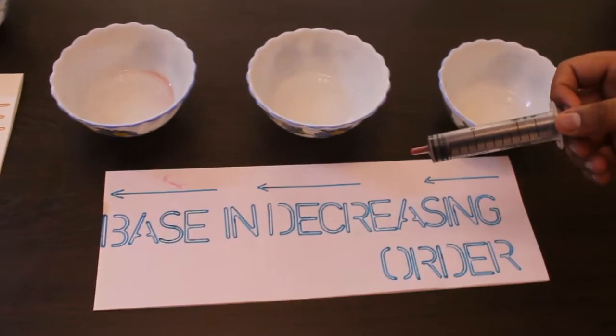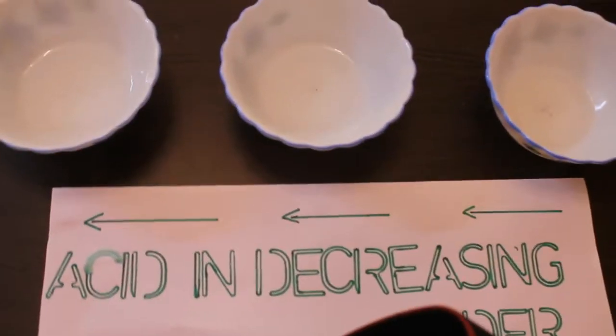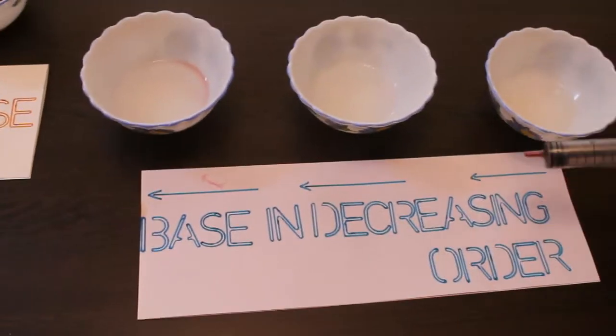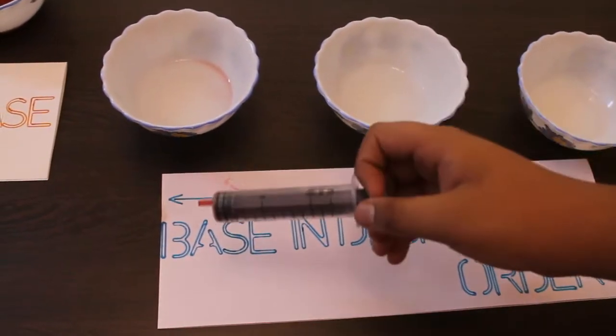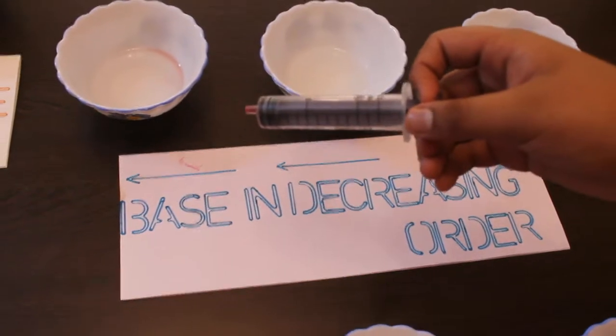So here I have the base in decreasing order of dilution. This is the strongest and this is the weak, this is strong, weaker and weakest. So now we shall see the color changes.